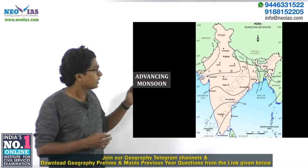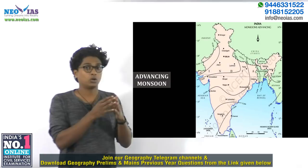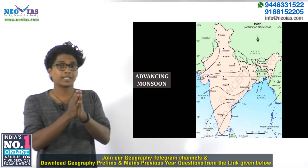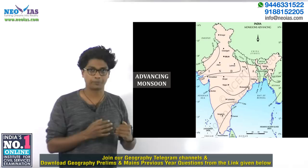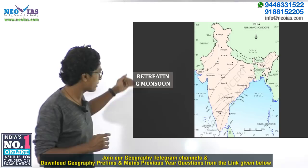From this you have to remember that the onset or beginning of the monsoon is progressive — it's not all at once. All regions don't get rainfall simultaneously; rather, they receive rainfall in a progressive manner.